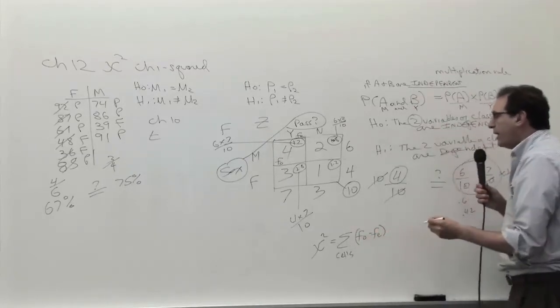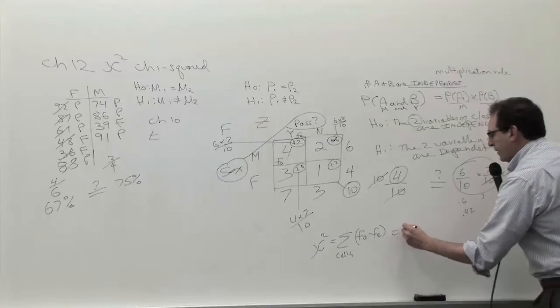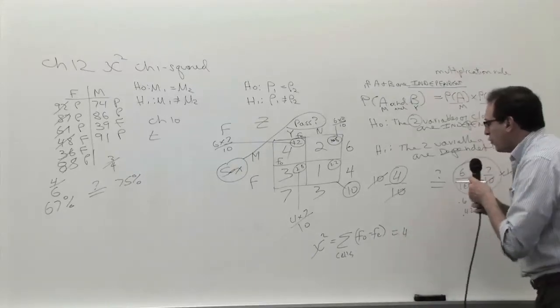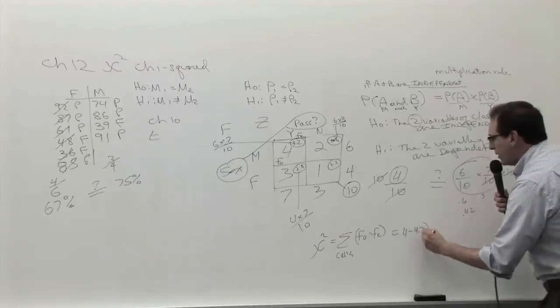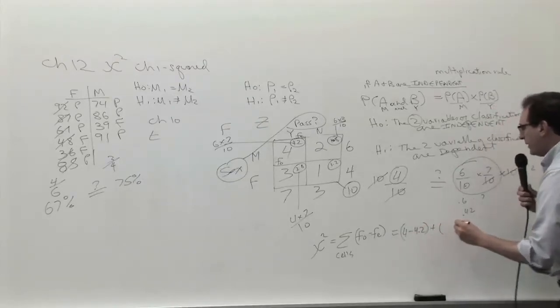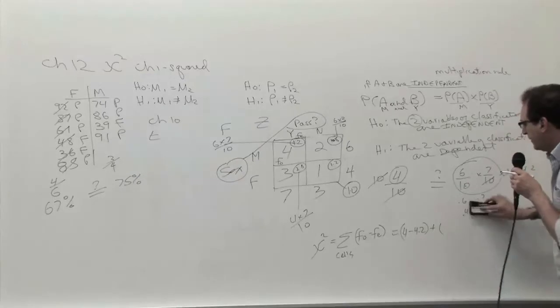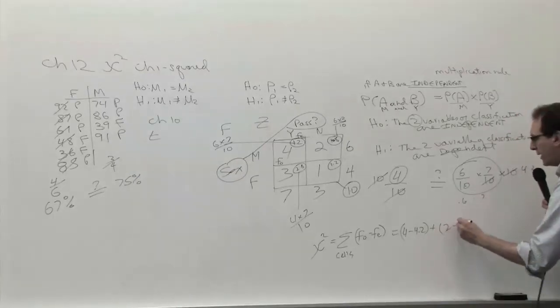Which is 4.2, and you add to that the same calculation applied to the second box, which is 2 minus 1.8.